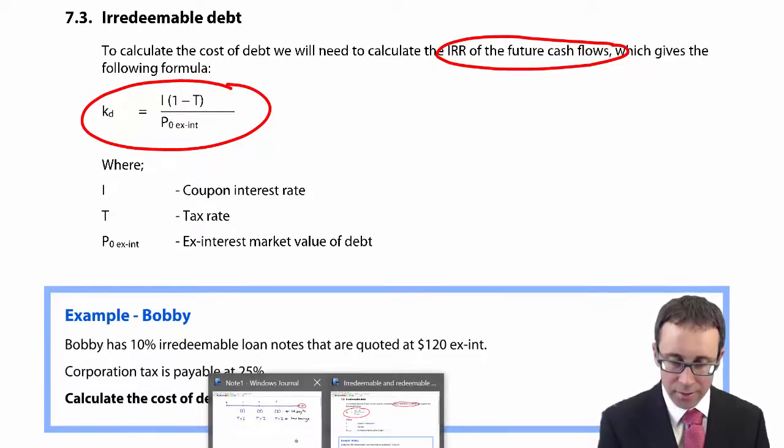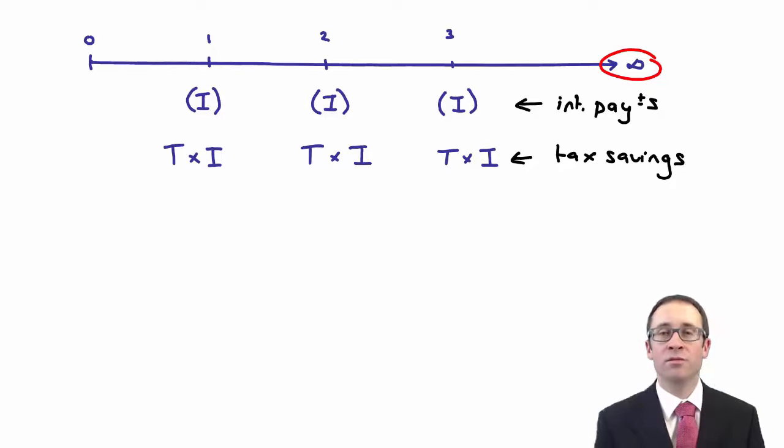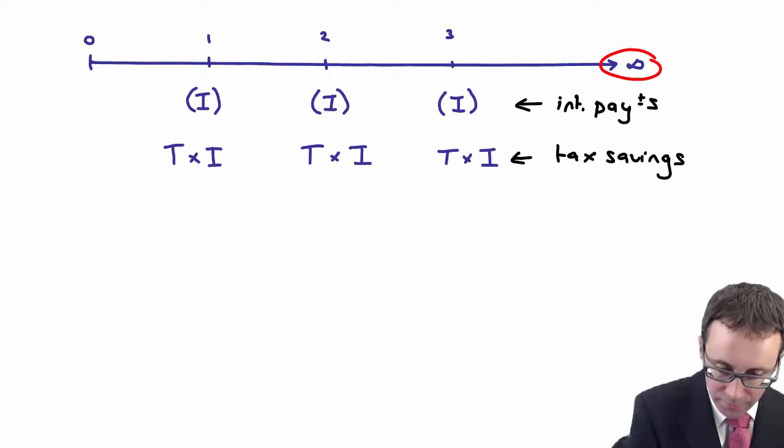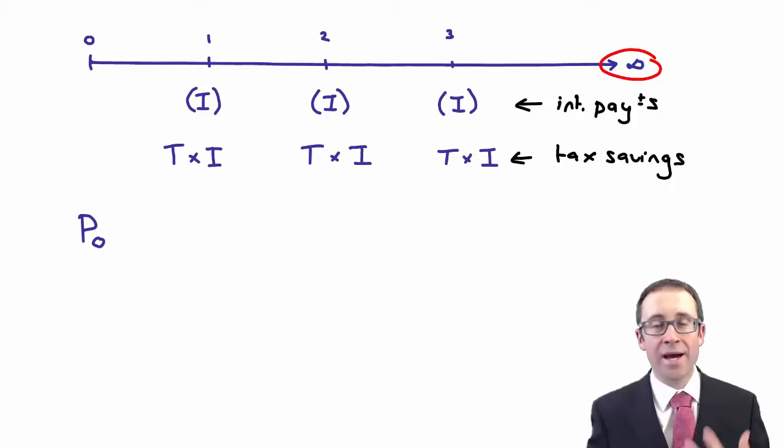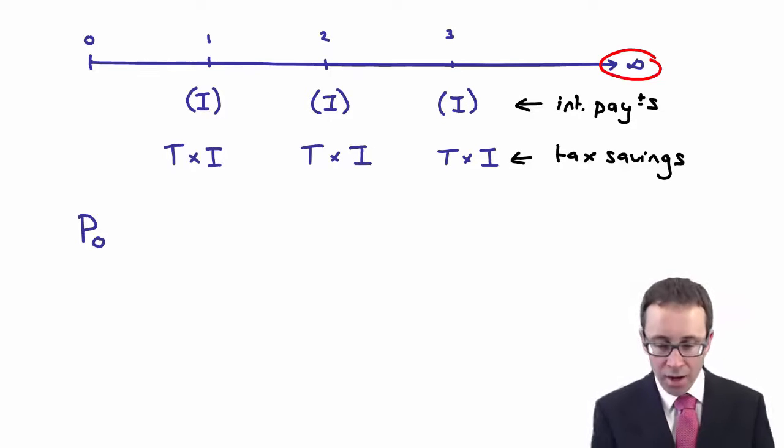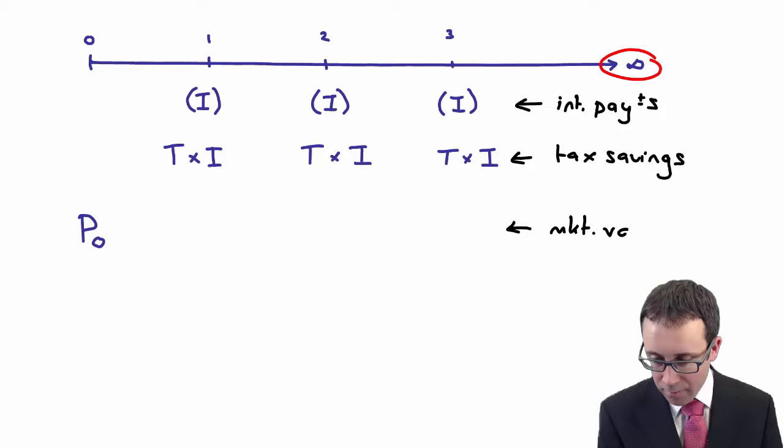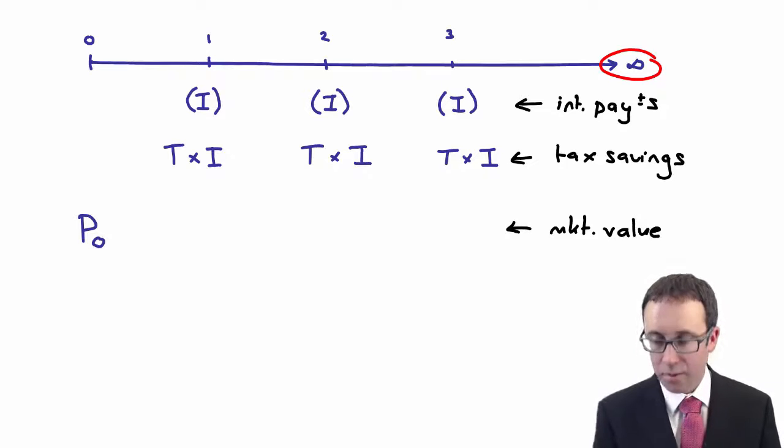Let's go through and take our introduction from earlier where we looked at the cash flows and add to that our price. We can put in today P0, because if I issue debt today, the money that I receive, the proceeds, is effectively what I think the debt is worth, which is its market value.